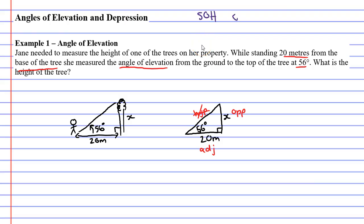S-O-H-C-A-H-T-O-A. You will notice that we're using the third part of our acronym. Because we have an O and an A labelled or an opposite and adjacent. So we're going to use TAN here.